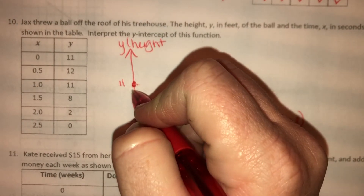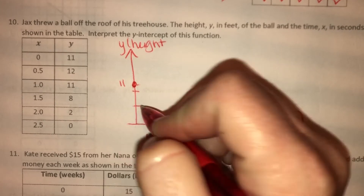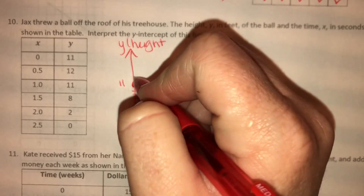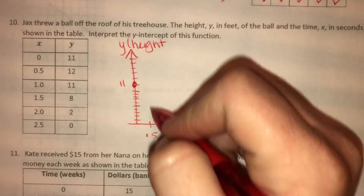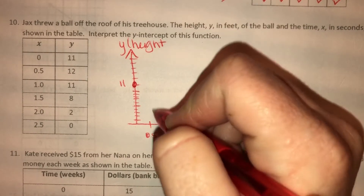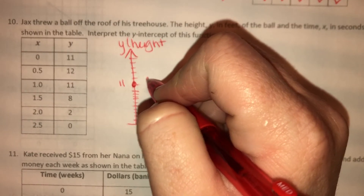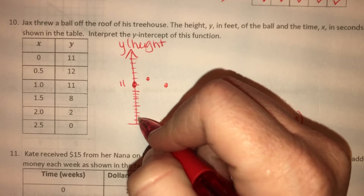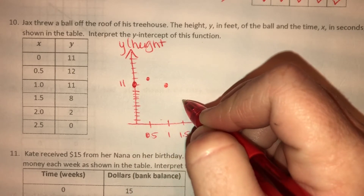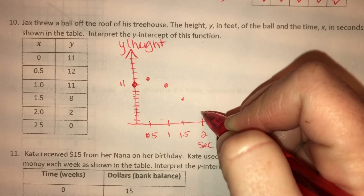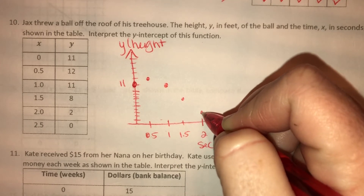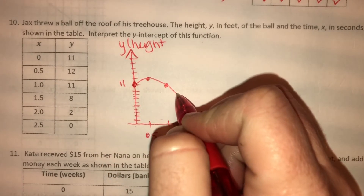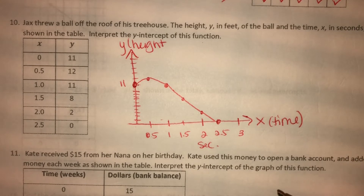After half a second, the ball goes up to 12. Then after a second, it goes back down to 11. After a second and a half, it goes down to 8. After two seconds, it goes down to 2. After two and a half seconds, it's on the ground. So it kind of goes up a little bit and then goes straight down — that's what our graph looks like.